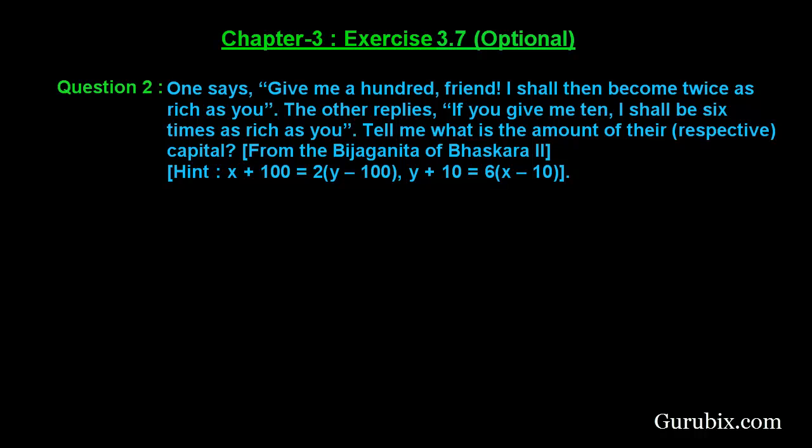Welcome friends, let us solve question number 2 of exercise 3.7 of chapter 3. The question says: one friend says 'give me 100, I shall then become twice as rich as you.' The other replied 'if you give me 10, I shall be 6 times as rich as you.' Tell me what is the amount of their capitals.